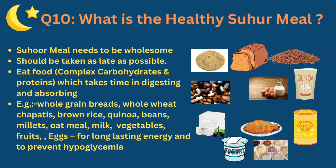What is the healthy sahur meal in Ramadan? The sahur meal is very important because it helps you sustain fasting throughout the day. It should be wholesome and taken as late as possible. Eat foods rich in complex carbohydrates and proteins because they take time to digest and absorb, helping maintain blood sugar levels during fasting. Include whole grain breads, whole wheat chapatis, brown rice or quinoa, beans, millets, milk, and vegetables, as they have a slow release of glucose and help maintain energy and glucose levels within the normal range throughout the day.